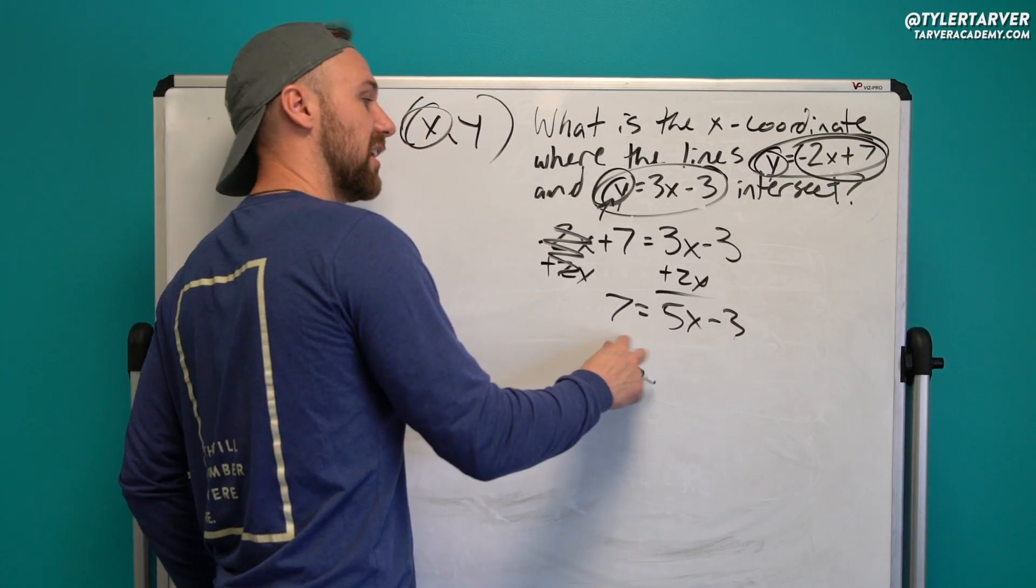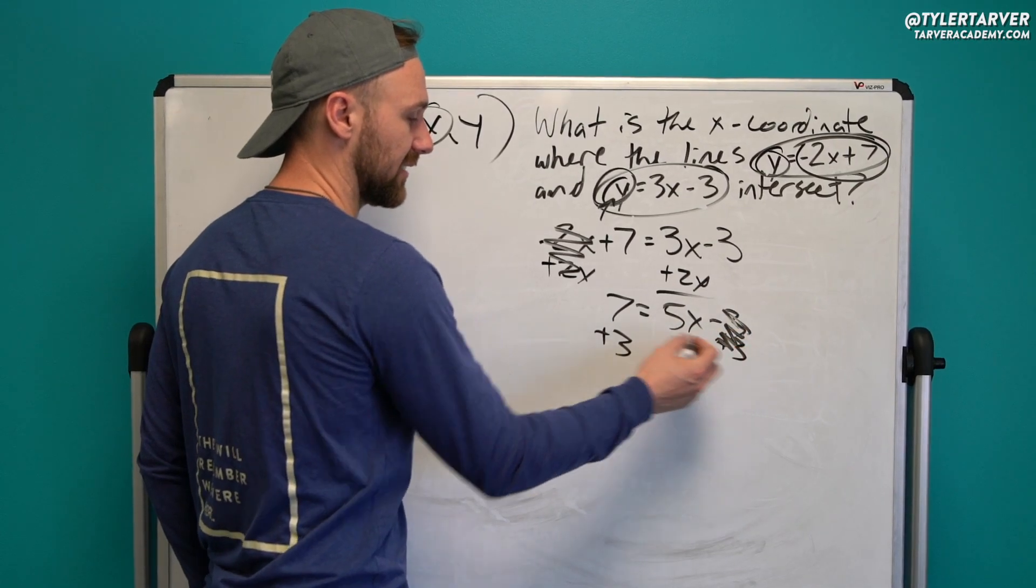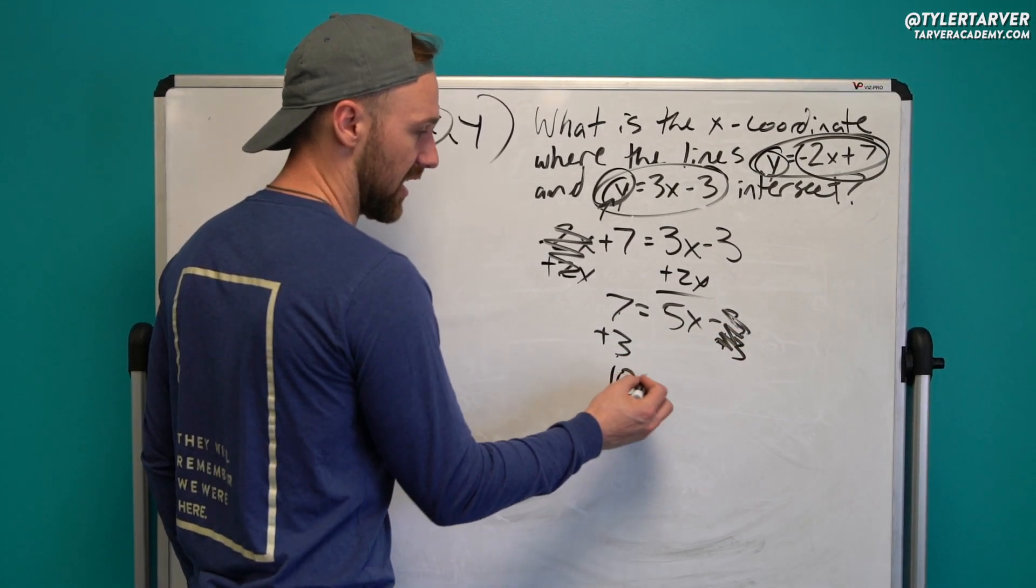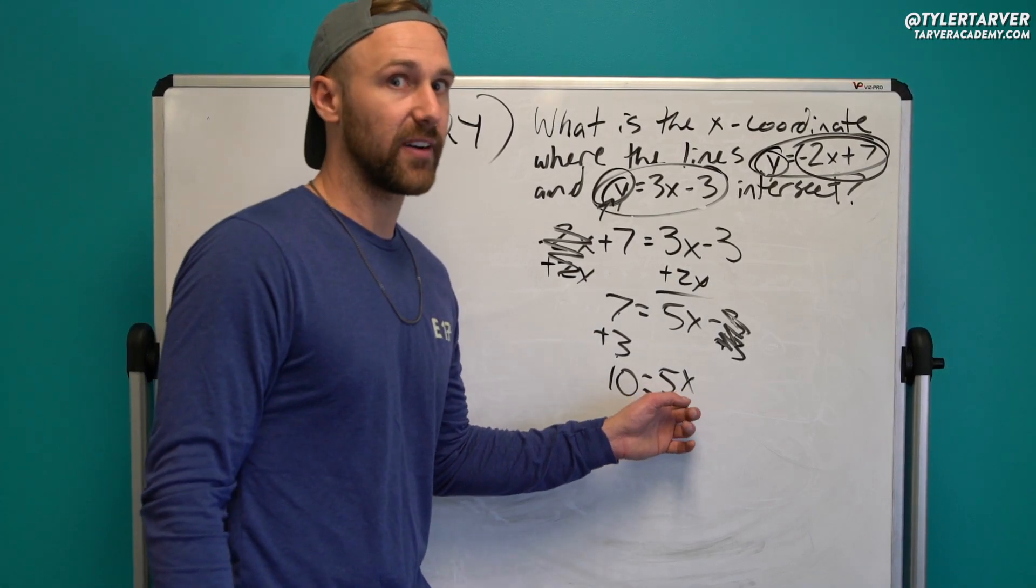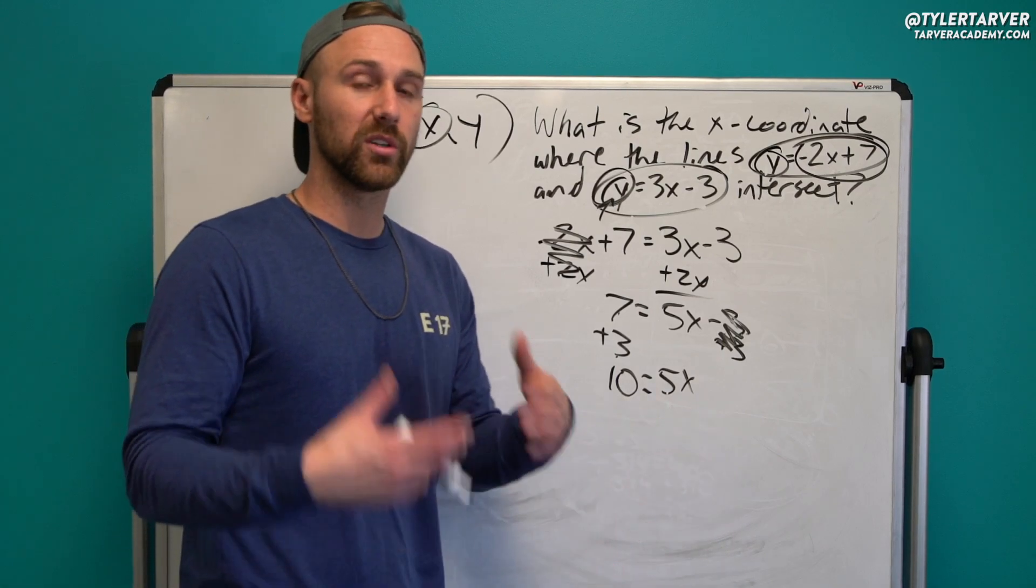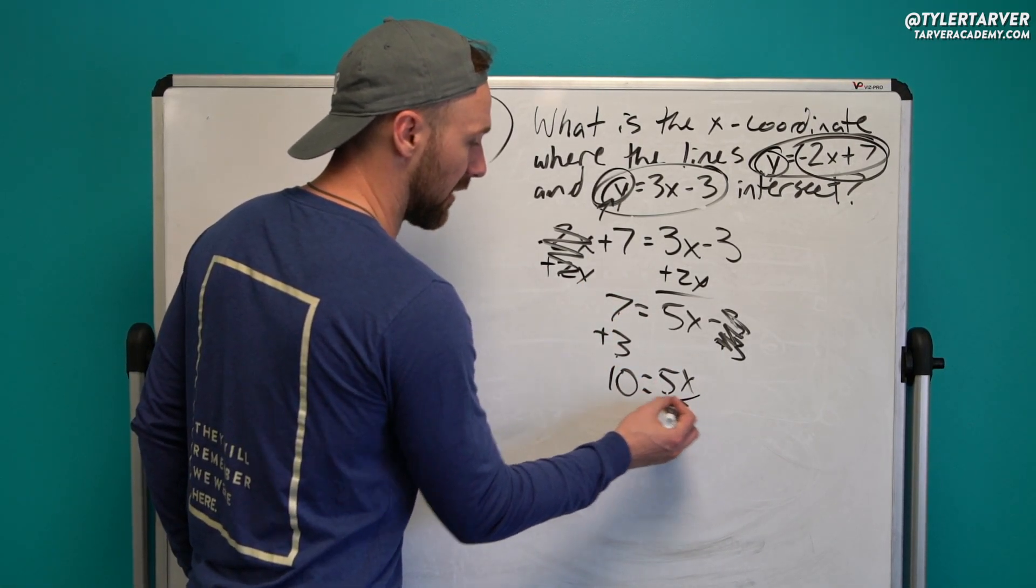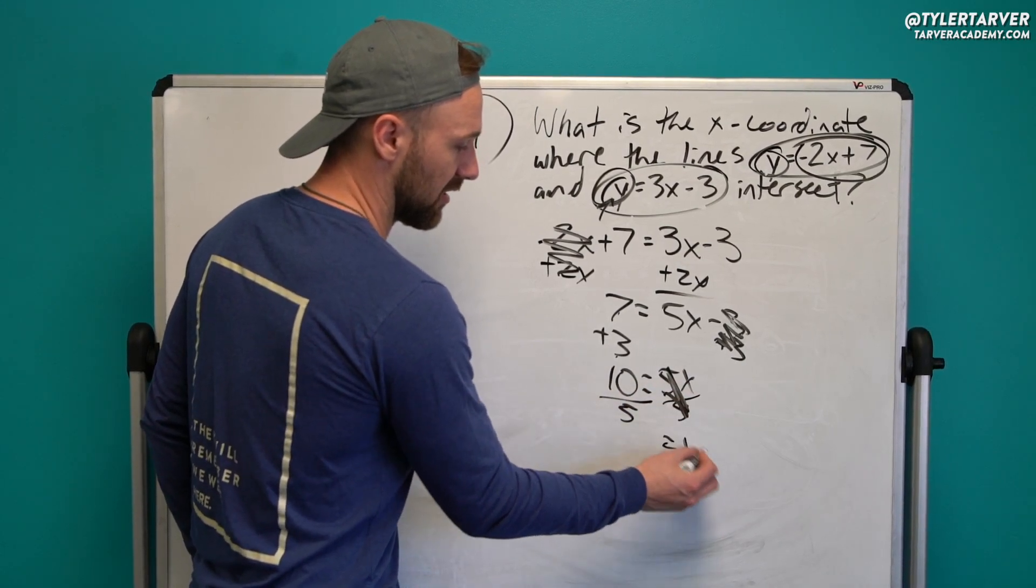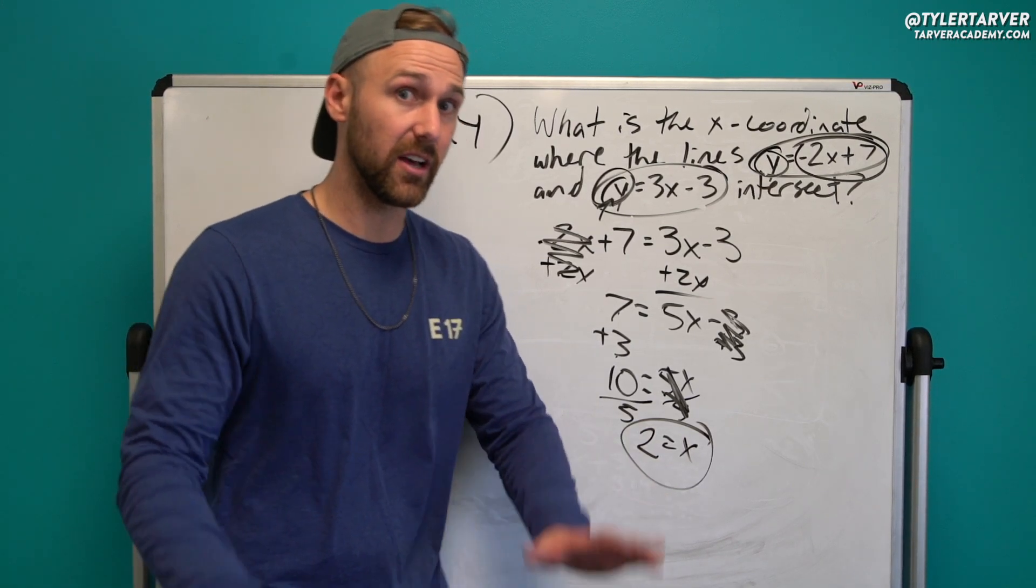3x plus 2x is 5x minus 3. Now I'm going to get my numbers over here. The opposite of minusing 3 is adding 3. That cancels out. 7 plus 3 is 10. 5x. Last step, don't subtract 5. That's where people mess up. It's 5 times x. So what's the opposite of multiplying? Dividing. So I'm going to divide by 5. That cancels out. 10 divided by 5 is 2. And you are done.